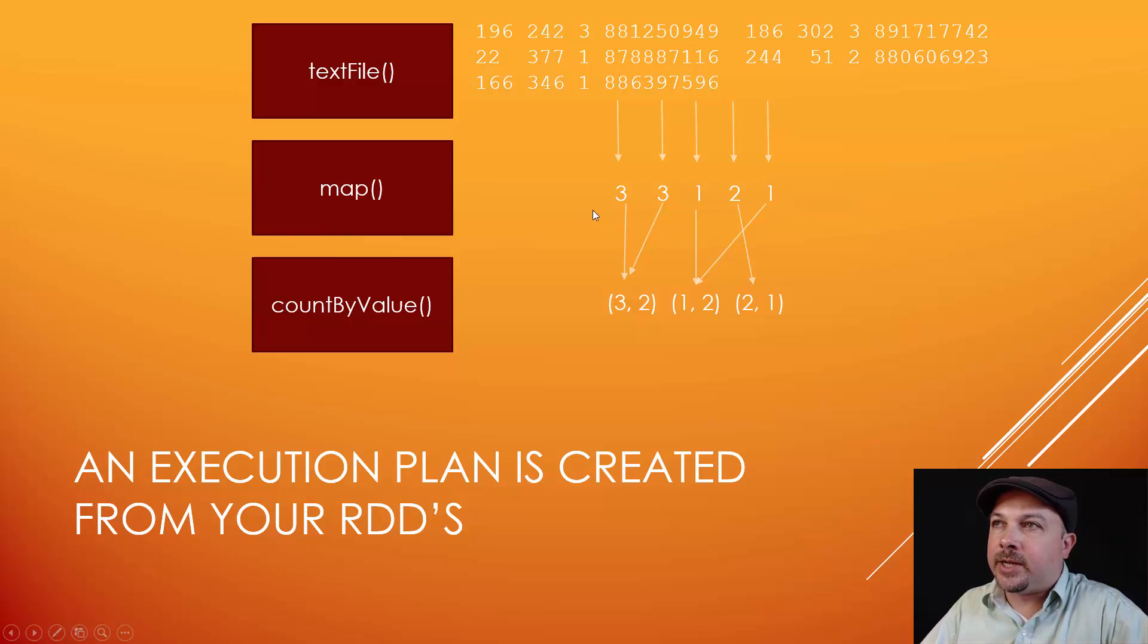Now, an important thing to realize here is that with map, there's a one-to-one relationship between each input and each output row of the RDD. So we can keep everything partitioned in the same manner at that step because these are all just a bunch of parallel lines. We're just taking data and transforming it, so that can all happen very easily in a distributed manner. But what happens when we call count by value? Well, we might have to shuffle things around here, so this is where things get a little bit more complicated.